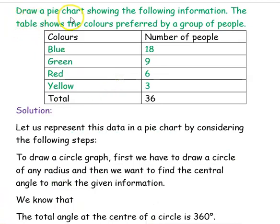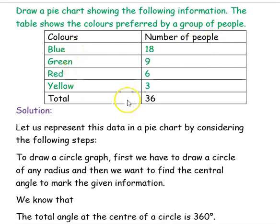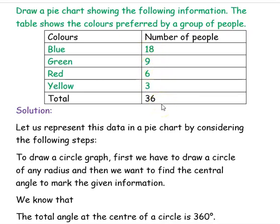Our first question is: draw a pie chart showing the following information. The table shows the colors preferred by a group of people. The various colors are blue, green, red and yellow. The number of people preferring each color is: blue is preferred by 18 people, green by 9, red by 6 people and yellow by 3 people. If you count this, the total number of people is 36.